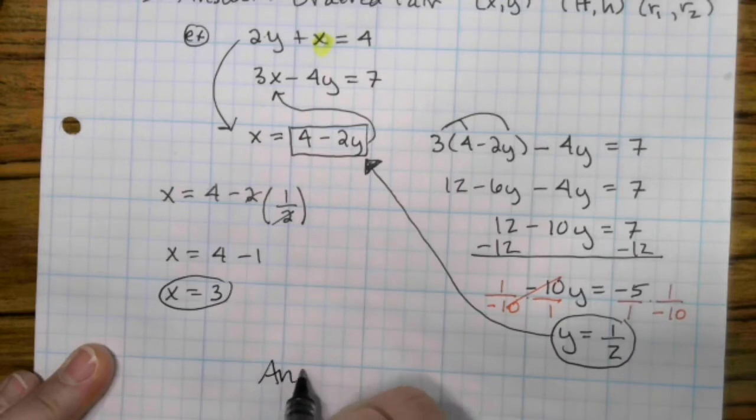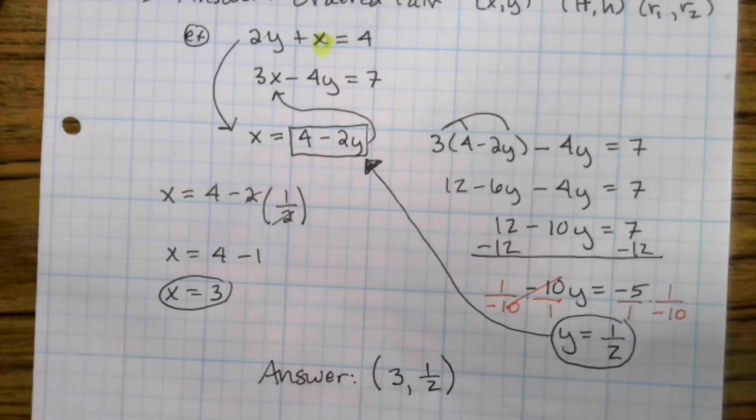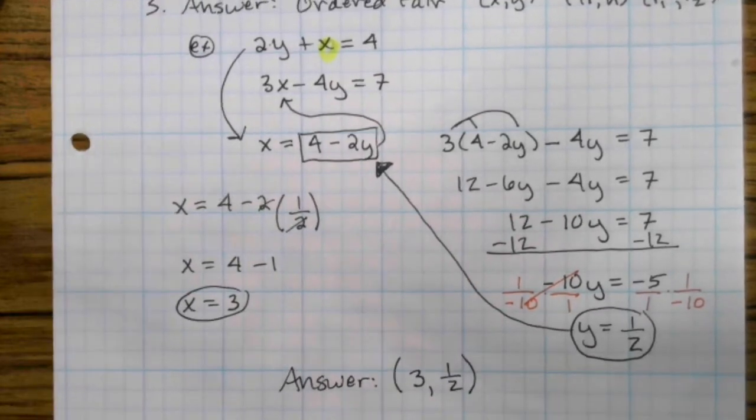So your answer is an ordered pair. The x comes first. That's 3. The y comes second. That's a half. And that is substitution method.